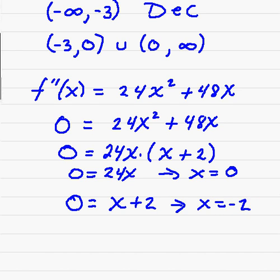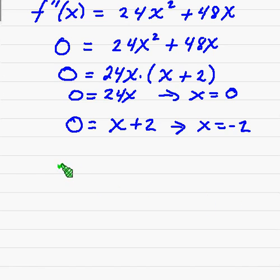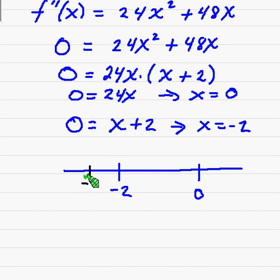And so we're going to draw a number line. I'm going to plot negative 2 on the number line, and how about 0? Now we want to take these test points: negative 3, about negative 1, and 1. Take our test points.